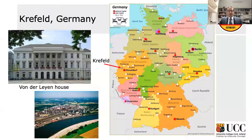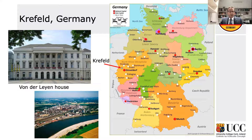I was born in Krefeld, Germany. Krefeld is in the very west of Germany, very close to the Dutch border on the River Rhine, near Düsseldorf — probably the best-known bigger city nearby. The size of Krefeld is about the size of Cork. Krefeld is known, or used to be known, for its silk fabric industry, which attracted in the 1700s a lot of people from all over Europe.